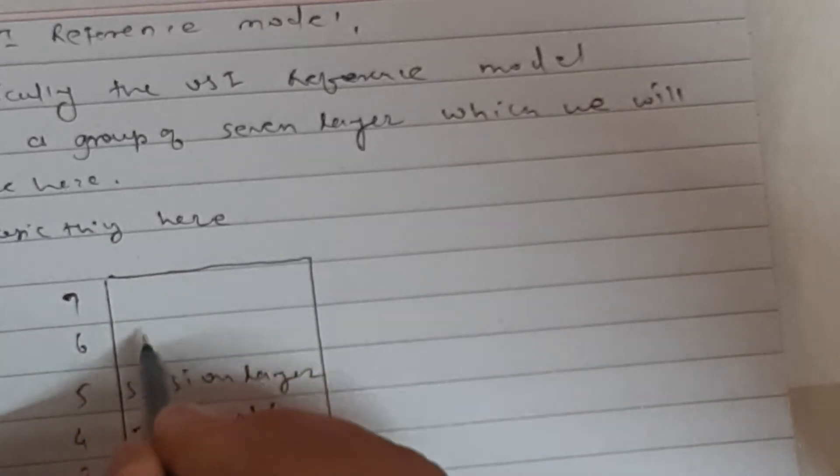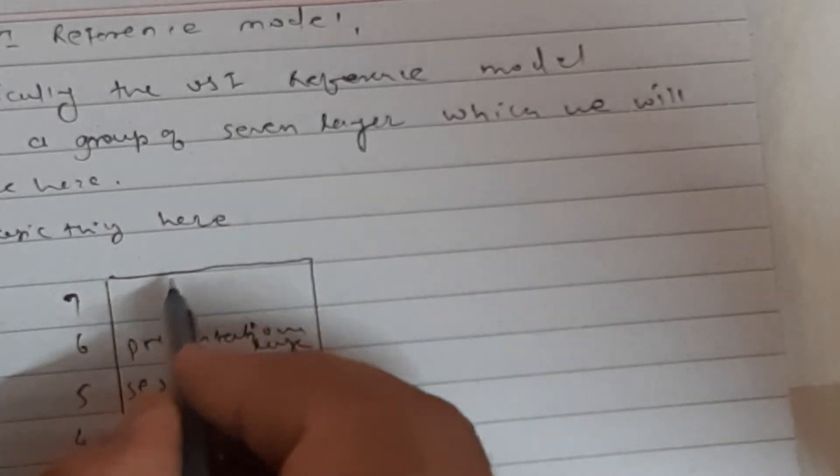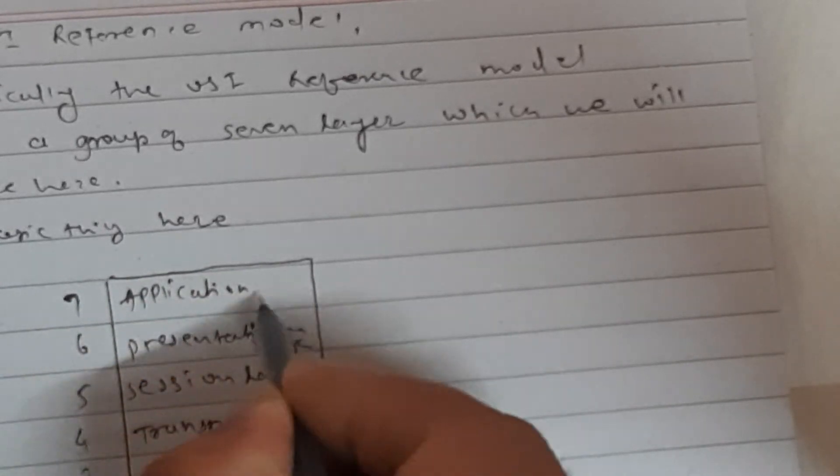Physical layer, then data link layer third one, network layer, then fourth one is transport layer, fifth one is session layer, sixth one is presentation layer, and last one is application layer. So actually I will give you a phrase which helps you to remember the sequence of these seven layers.